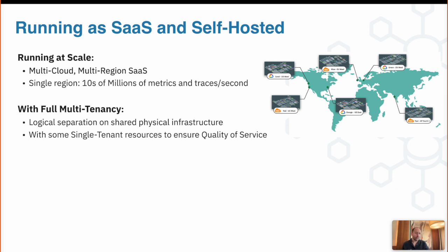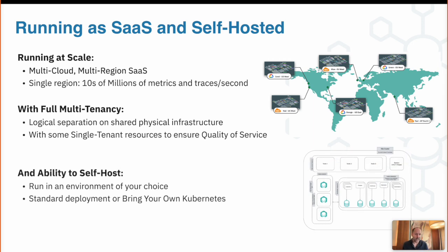We run at scale with multi-region, multi-cloud SaaS. Of course it's also possible to self-host, and that's done in two fashions. One is to bring your own Kubernetes — you can bring your own OpenShift, CNCF Kubernetes, etc., and run the Instana backend on it. This is referred to as self-hosted because you're running exactly what we have when we run a SaaS region, which means you get full multi-tenancy. You can also use our standard deployment, which means you don't have to manage Kubernetes yourself — that's handled as part of the Instana install package.